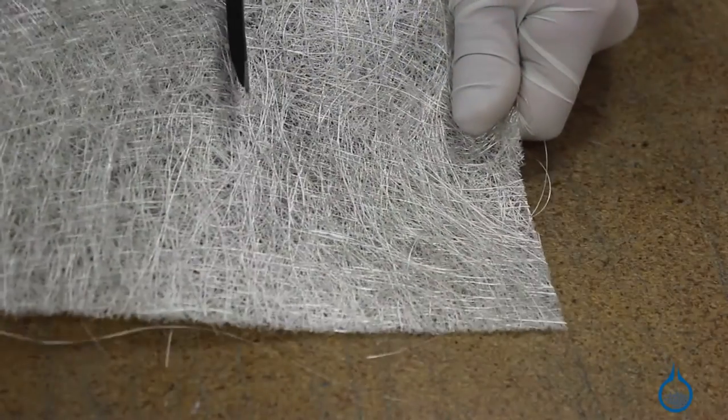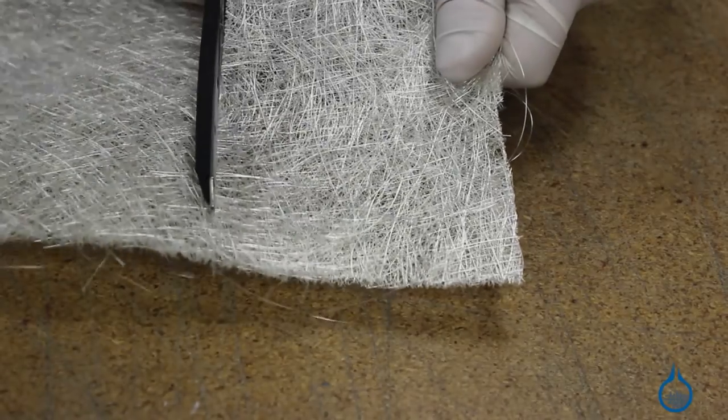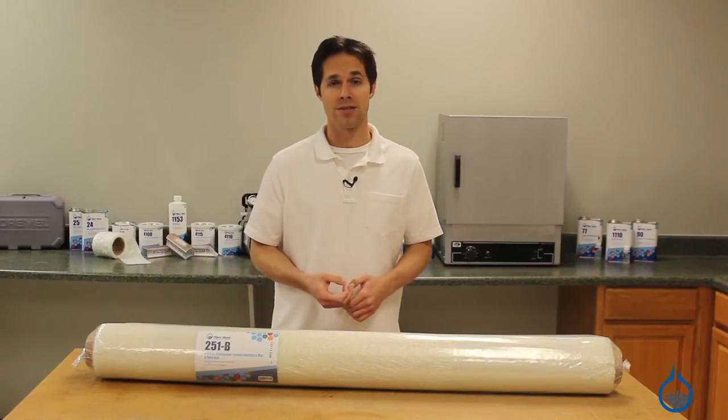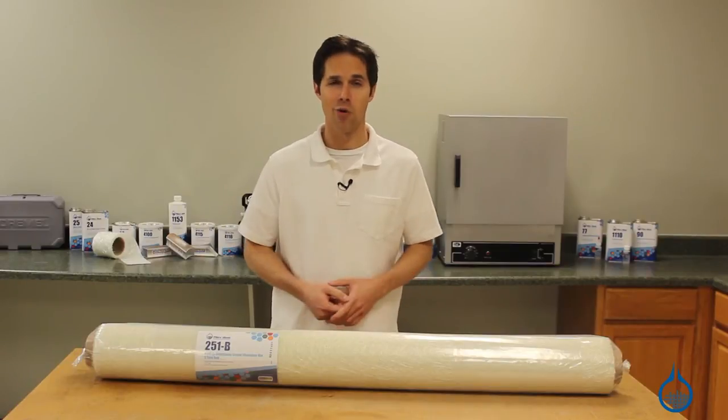Also keep in mind the continuous strand mat does not tear apart like its chopped strand counterpart. It does, however, produce fiberglass composites that combine excellent strength and low weight.